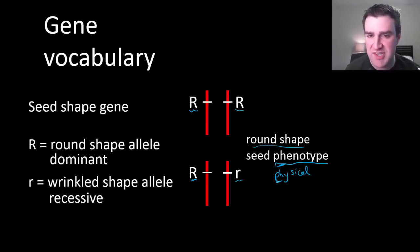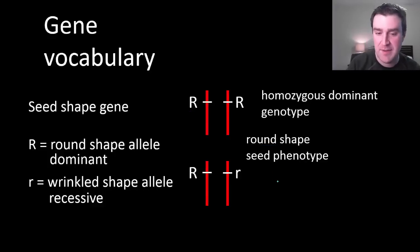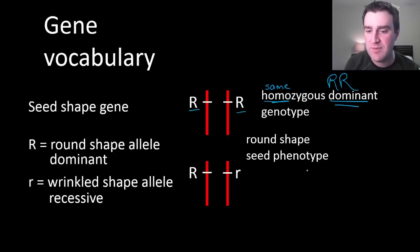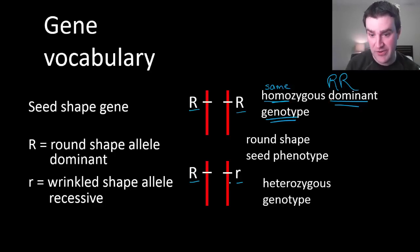And so these two organisms would actually have the same phenotype but they would have different genotypes. This first organism up here with both dominant alleles we would call homozygous dominant. Homo means the same, and it is the same with two dominant or two uppercase alleles. That would be its actual gene combinations or its two alleles, and so we call that its genotype. Whereas this organism down here with one capital and one lowercase allele we would call heterozygous. Hetero means other, and so they have one and the other for their two alleles. One uppercase, one lowercase.